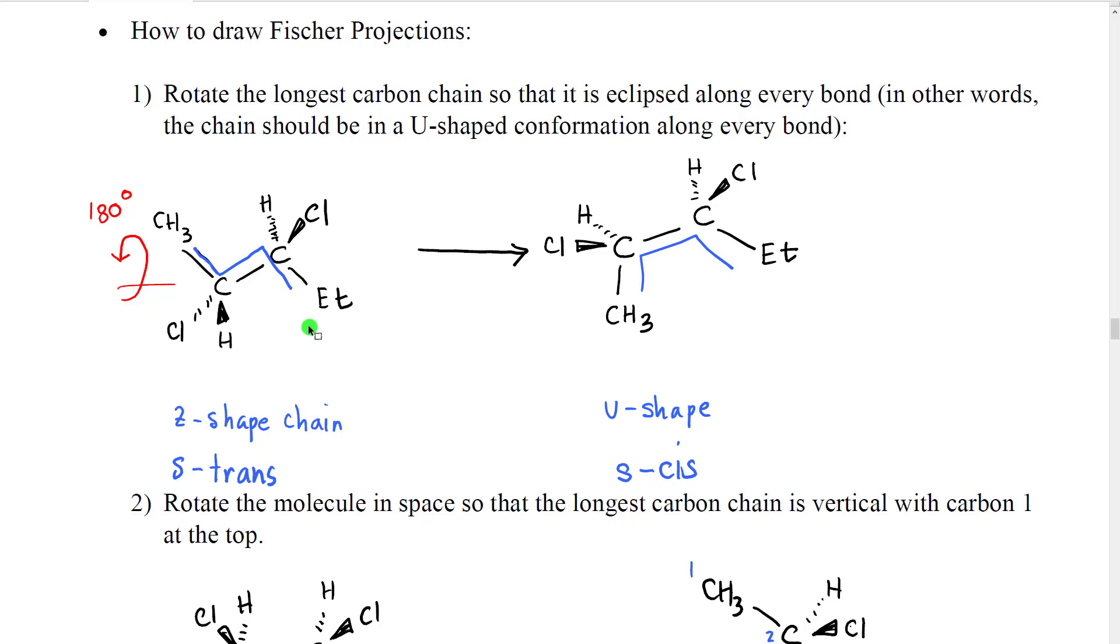We actually have a special term for this. If we look, this group and that group look almost trans to each other. However they are not truly trans because we can rotate around the bond. Therefore organic chemists have designated this the S trans, which indicates or represents single bond trans. It's not really trans because we can rotate around the single bond, but it's one of the shapes of that rotation.